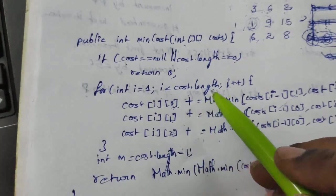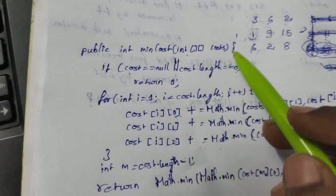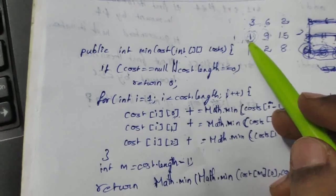Otherwise we are going to iterate the cost matrix. Here let us see we are starting with 1 since as we already told you we are going to look back.